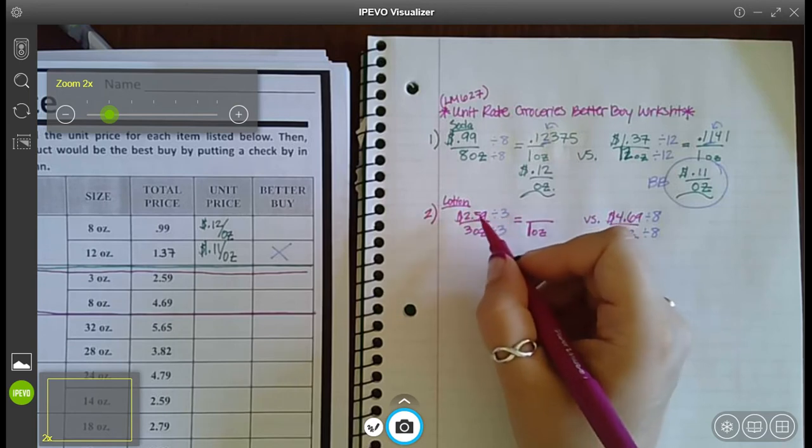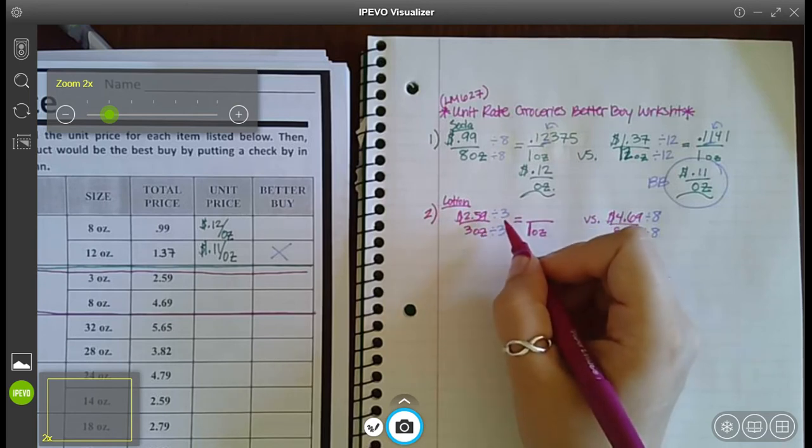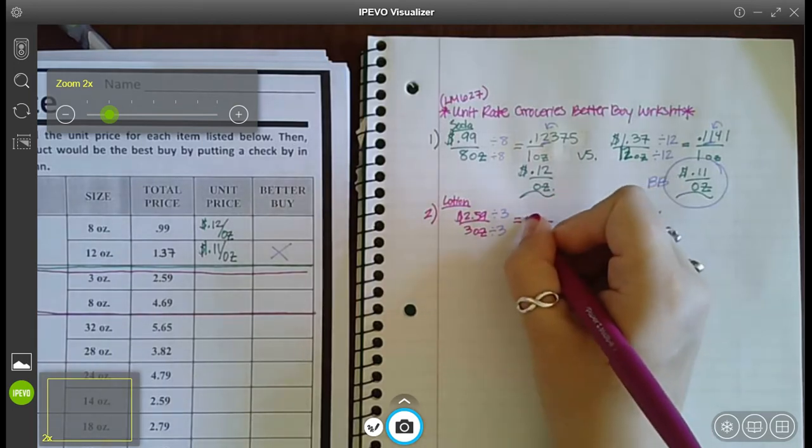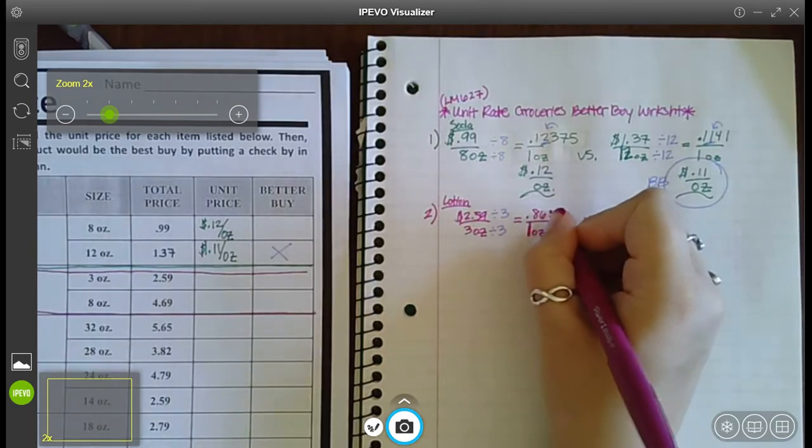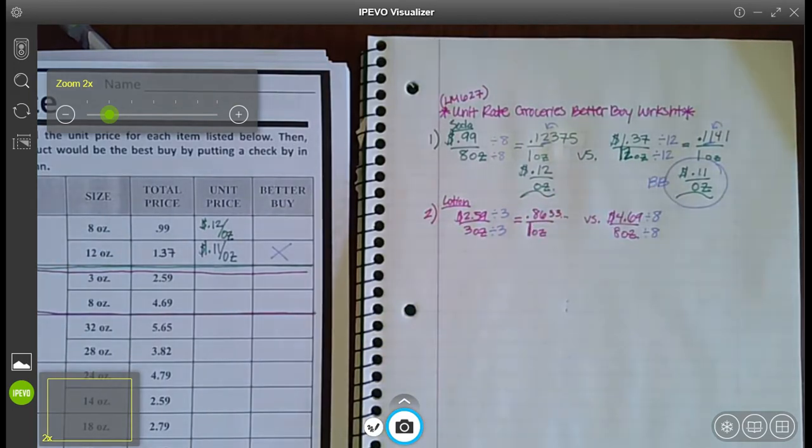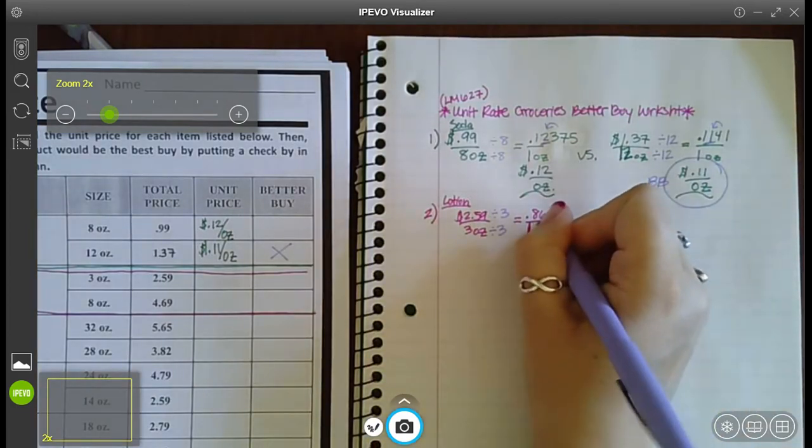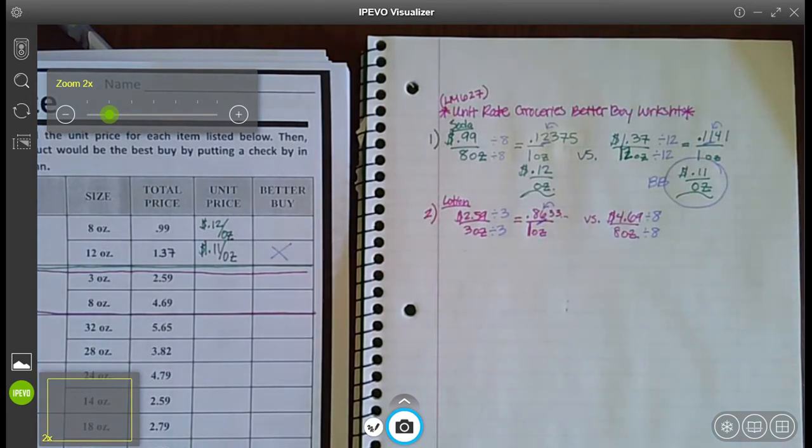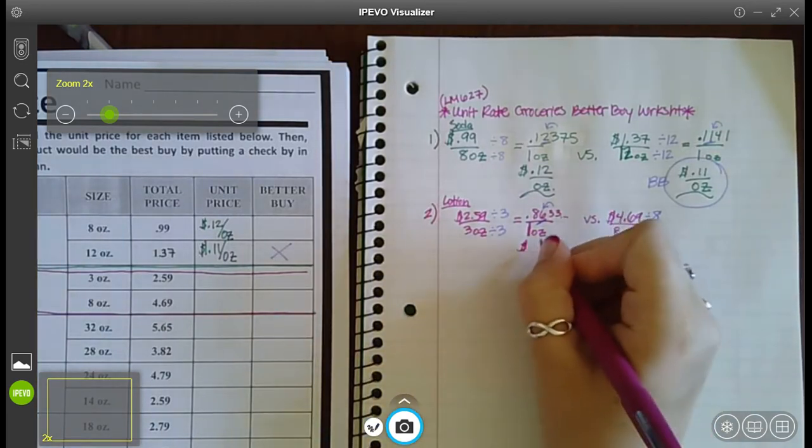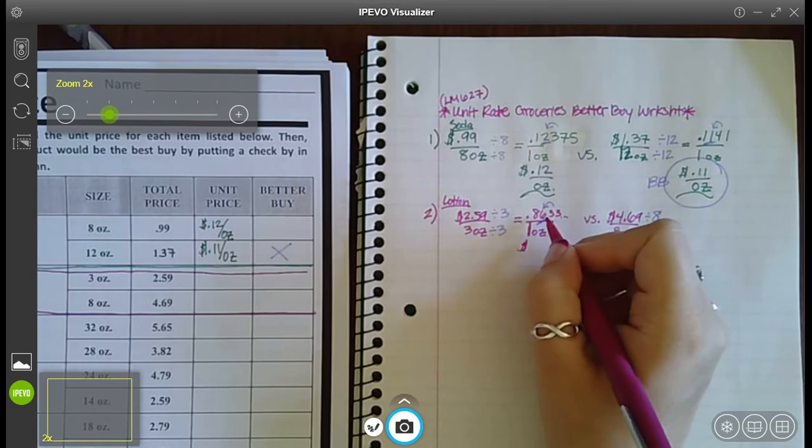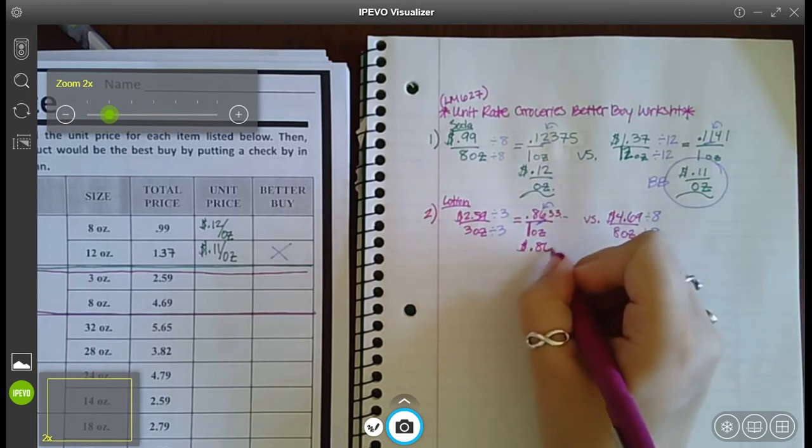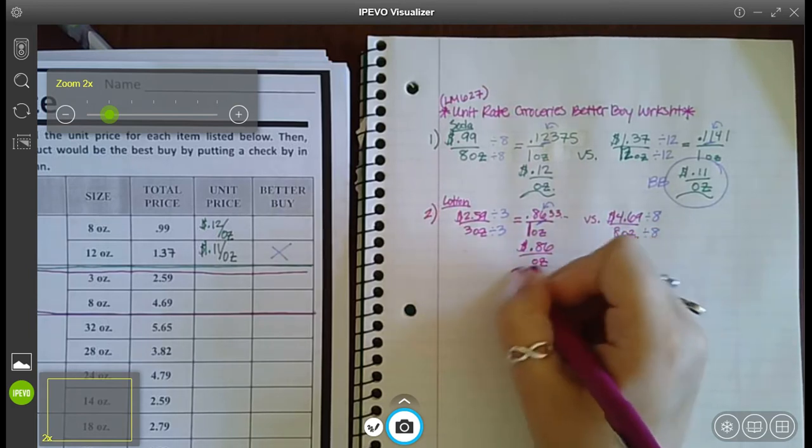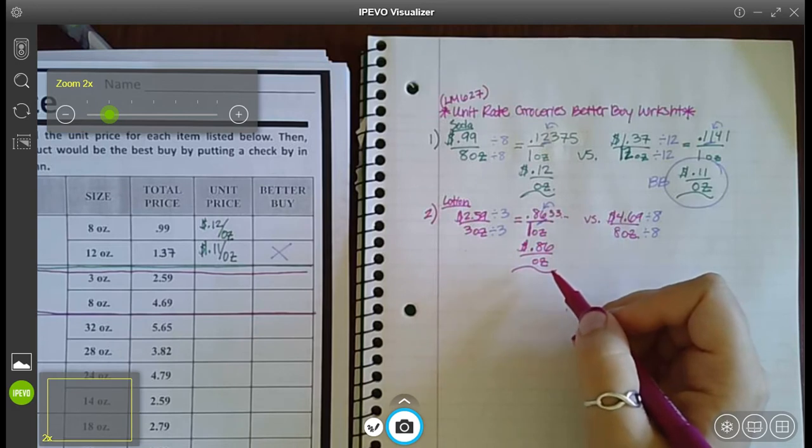So type into your calculator 2.59 divided by three and you get 0.86333 keeps going. Okay, I don't need to write all those numbers out. All I need to focus on is the hundredths place and one number right behind it because I'm talking about money. Well, that three behind the six tells the six to stay a six. So the unit rate for this one is 86 cents per ounce.